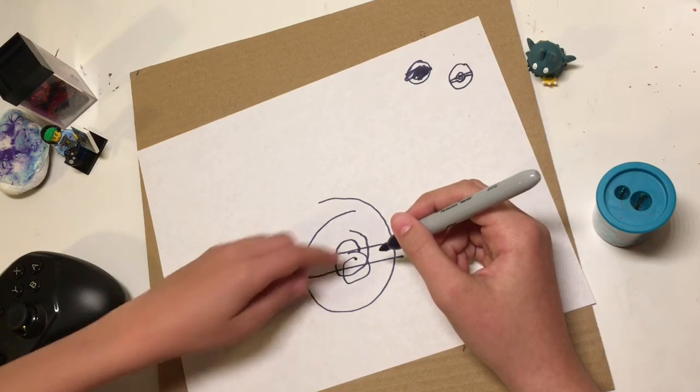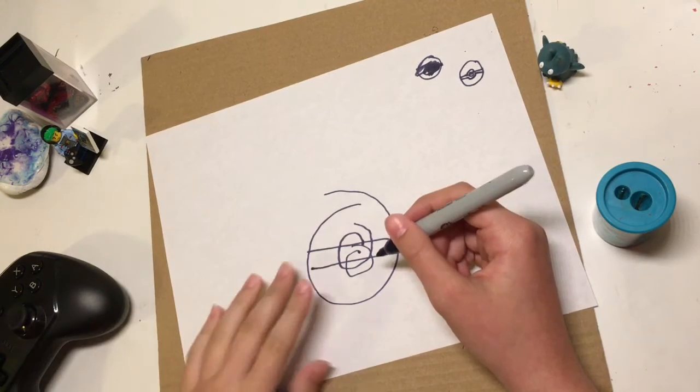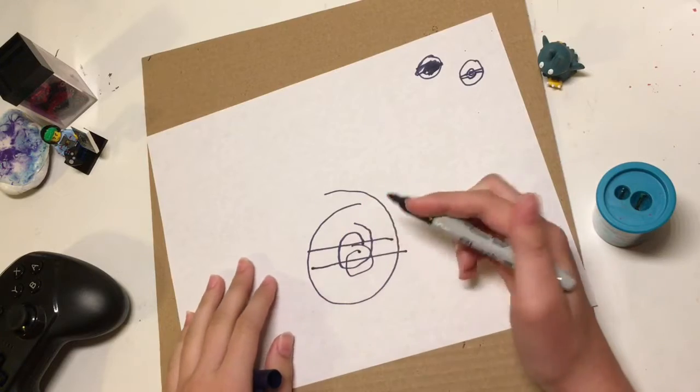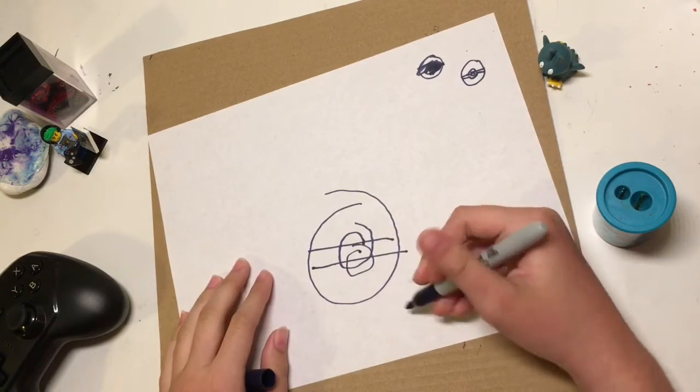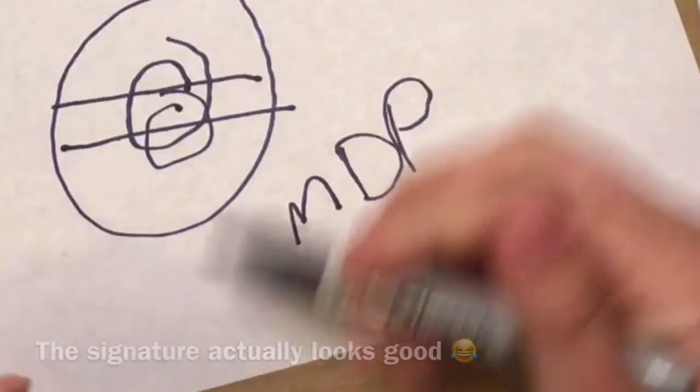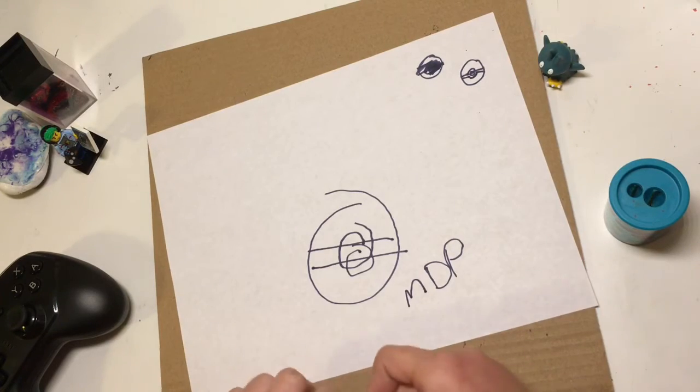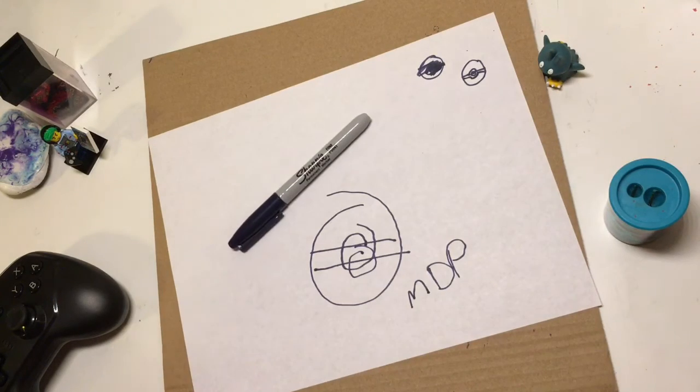Just shade around the circle, the biggest one. Okay, we're gonna sign it MDP for Missy DuPont and now we're gonna check it. The unveiling!